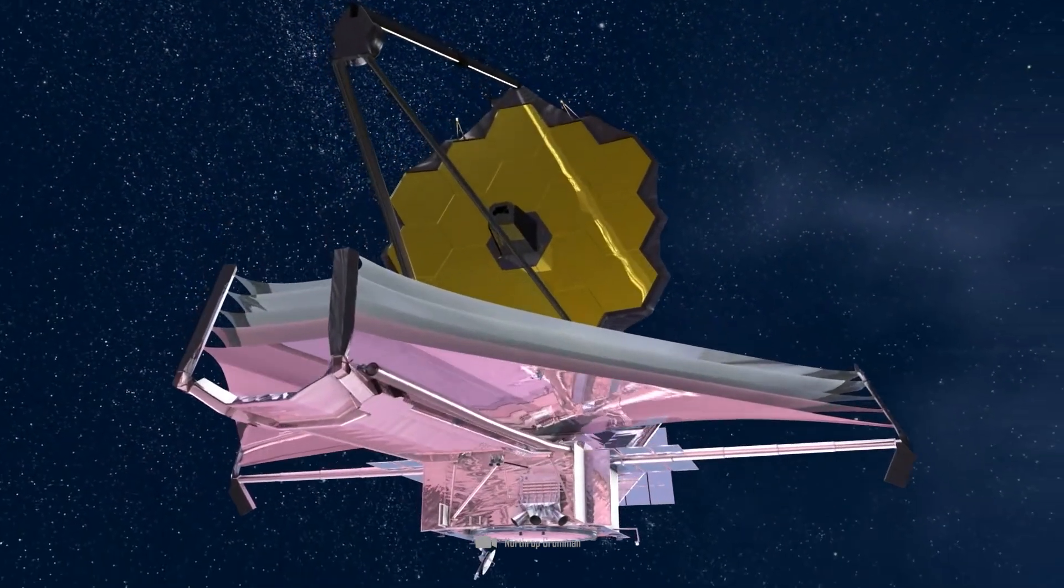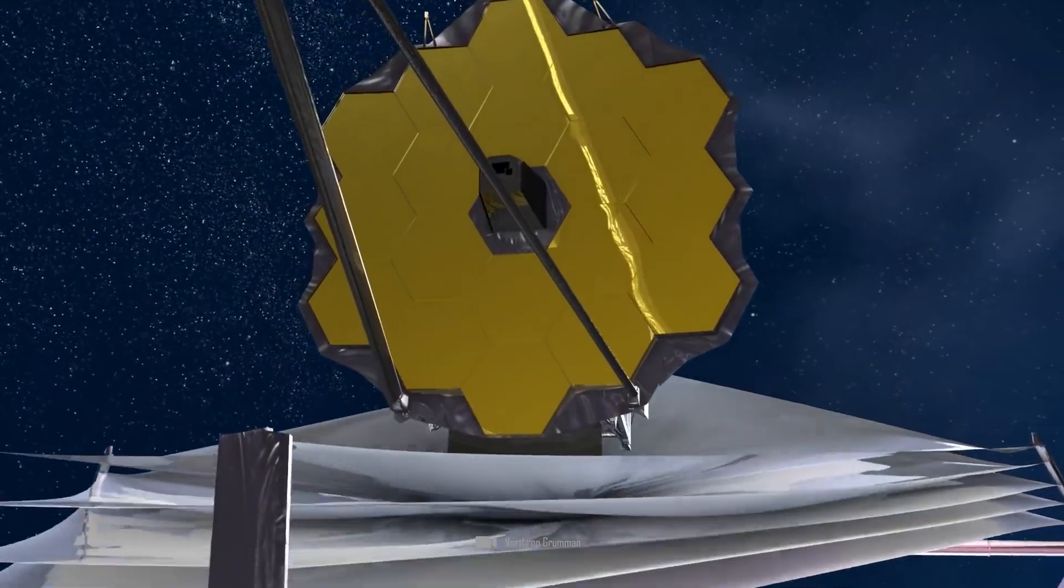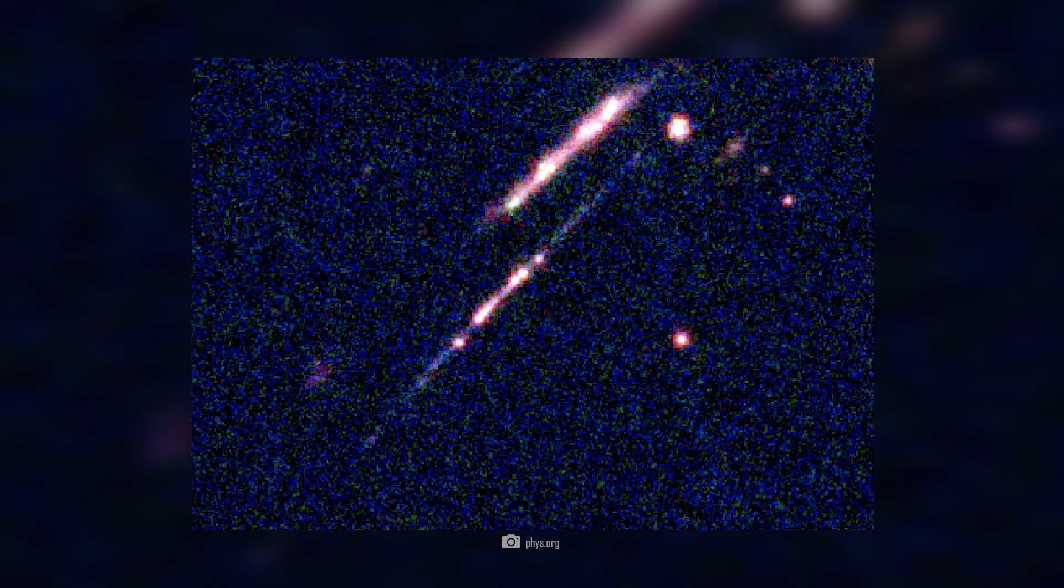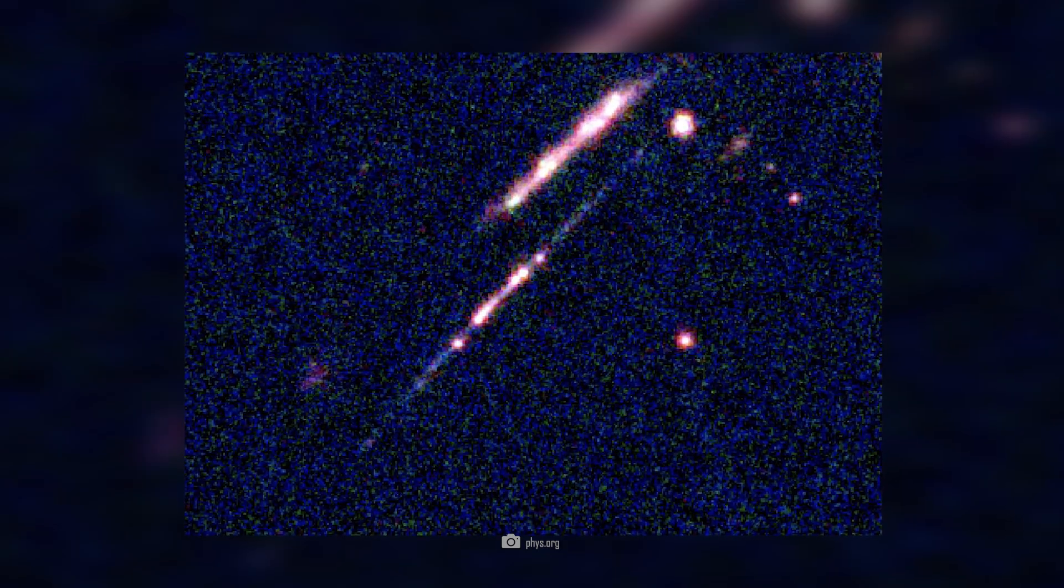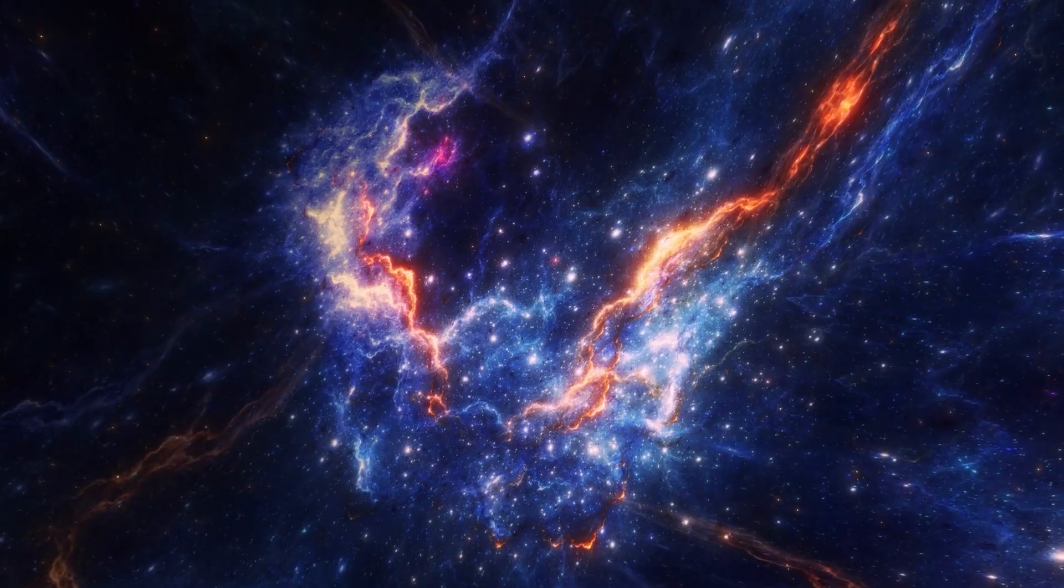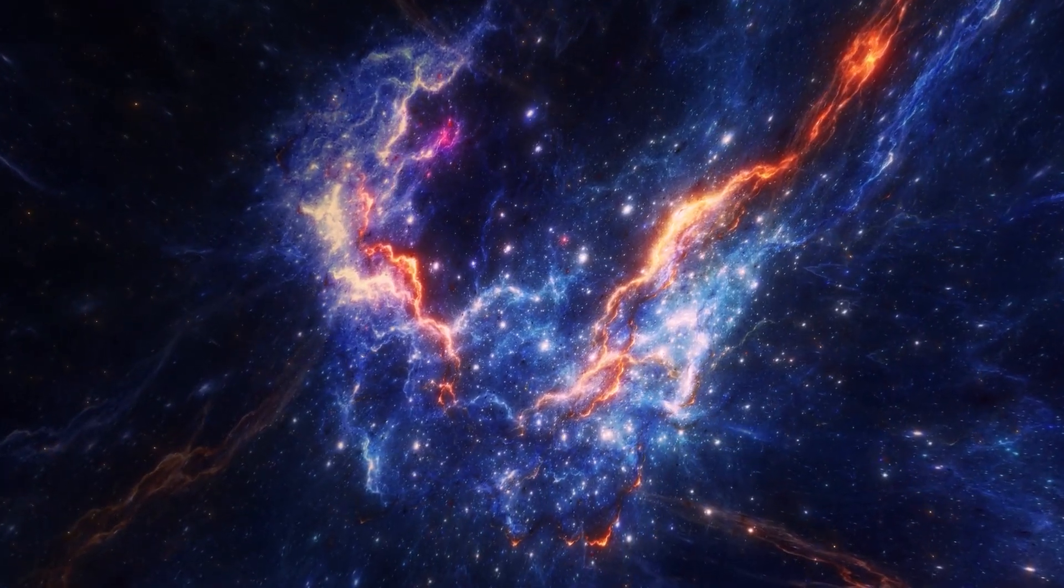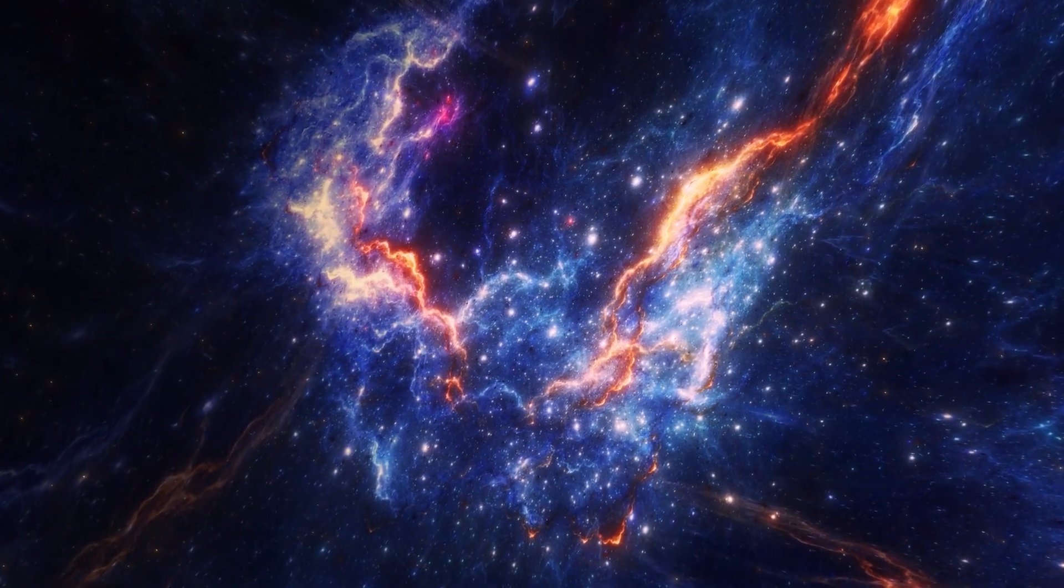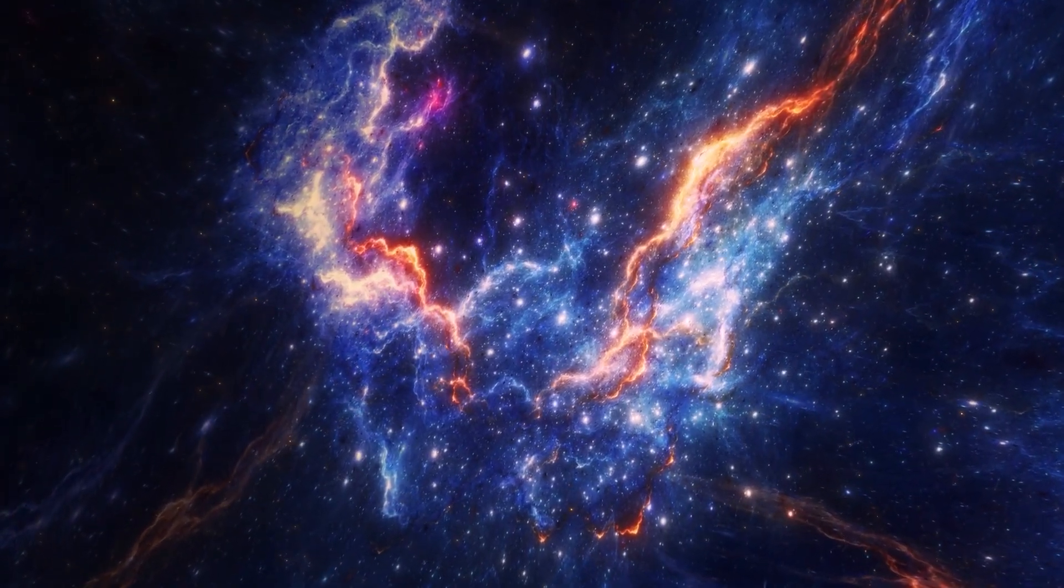The spectrometer, which can measure infrared radiation in particular, showed that the diffused light really is a separate galaxy that appears very small and low in luminosity. Further analyses will now show how this galaxy was structured and what kind of stars and elements it contained.